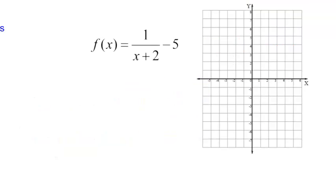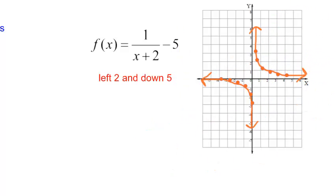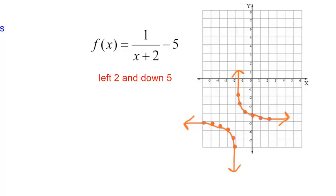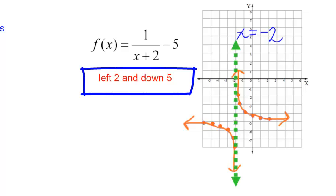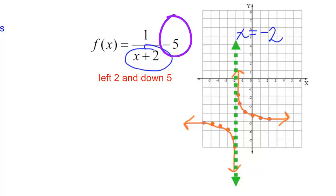Let's try one more. f of x is equal to 1 over x plus 2 minus 5. This is going to go left 2 and down 5. Starting with the basic 1 over x, it goes left 2 and then down 5 spaces — that's the new graph. I have a vertical asymptote at x equals negative 2, because x cannot be negative 2 or the denominator equals 0. Since my graph was shifted down 5 spaces, I now have a horizontal asymptote y equals negative 5.